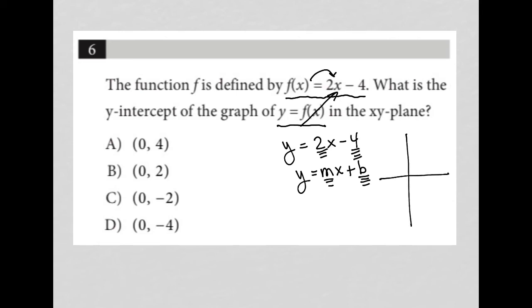On a graph, if our y-intercept is down at -4, that means we have a point here on the y-axis. That point itself would be (0, -4).